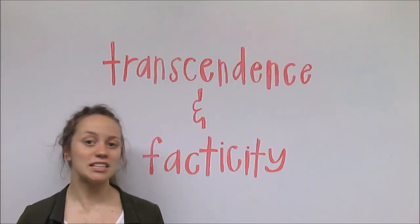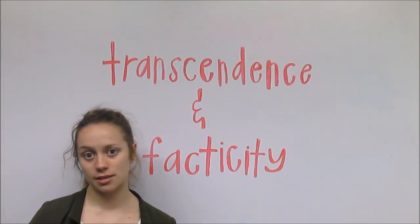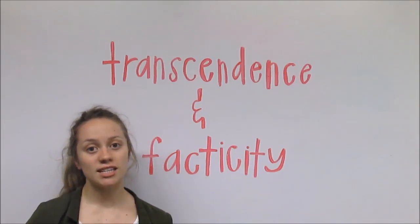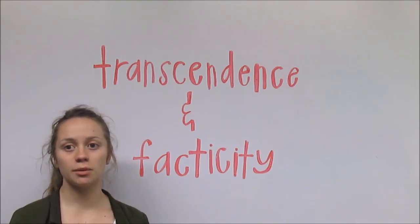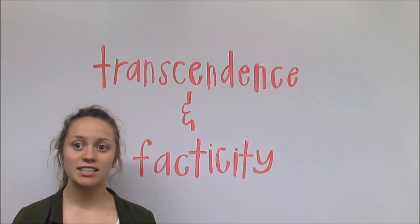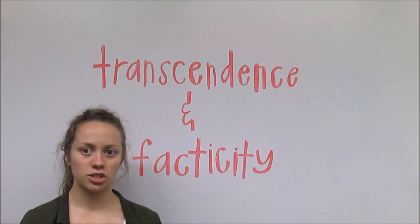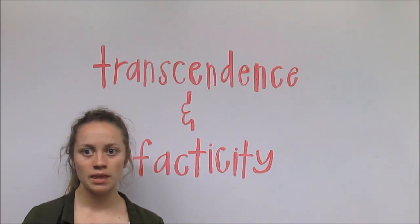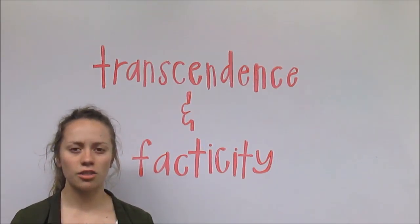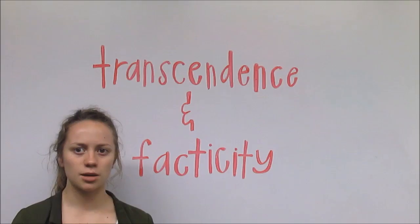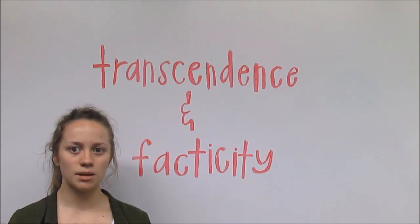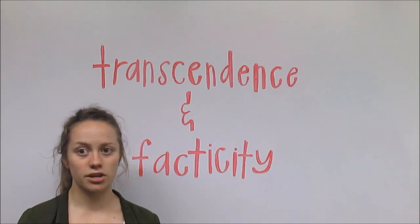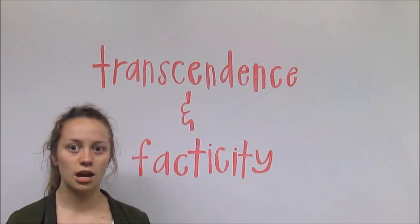We're going to begin by defining some terms of existentialism. The first two are transcendence and facticity. As Thomas Flynn explains in his text, Existentialism: A Very Brief Introduction, facticity denotes the givens of our situations, such as our race and nationality, our talents and limitations, the others with whom we deal, as well as our previous choices. Transcendence, or the reach that our consciousness extends beyond these givens, denotes the takens of our situation, namely how we face up to this facticity.